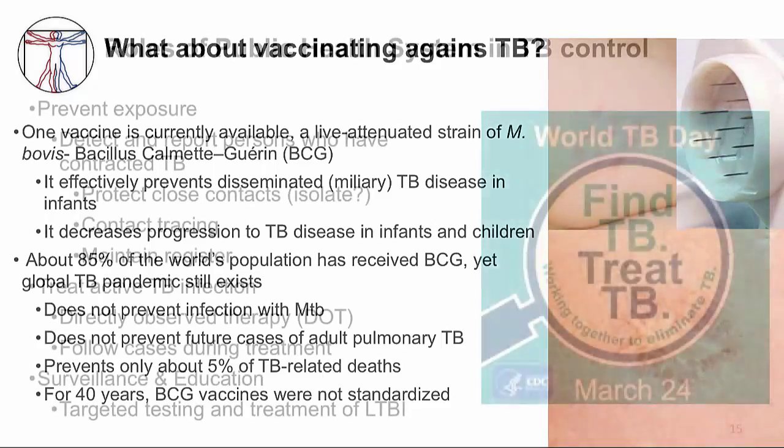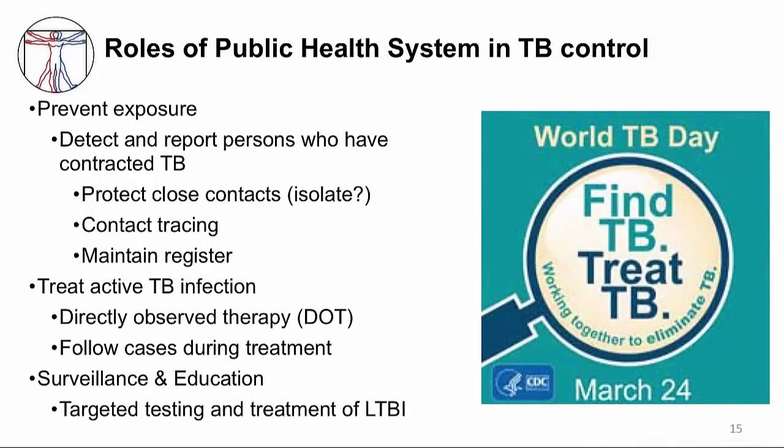Without an effective TB vaccine, a robust public health system is vital to control TB. Ideally, TB control needs to include several components. One is to protect people from exposure by instituting mandatory reporting of TB disease cases to the public health department. Knowing an index case allows officials to isolate the index case if necessary and to identify contacts for testing and treatment.